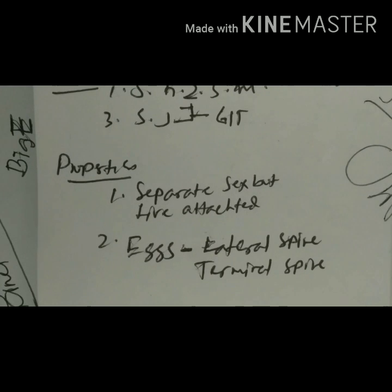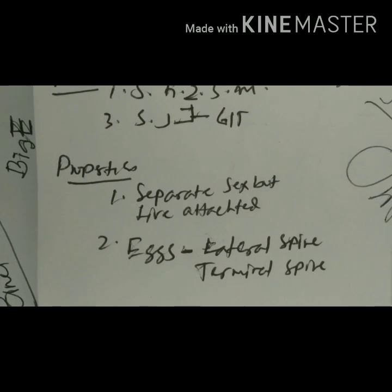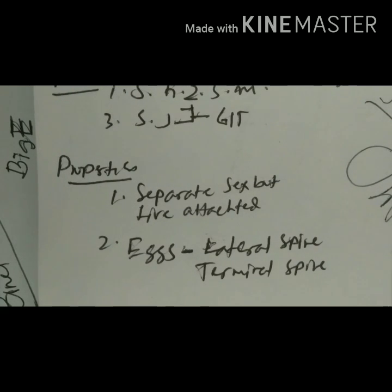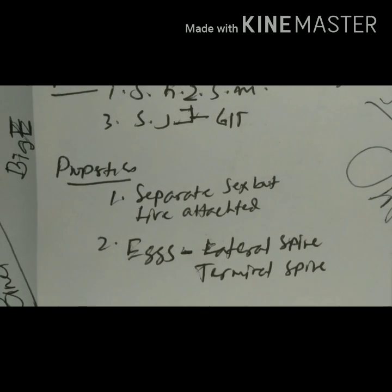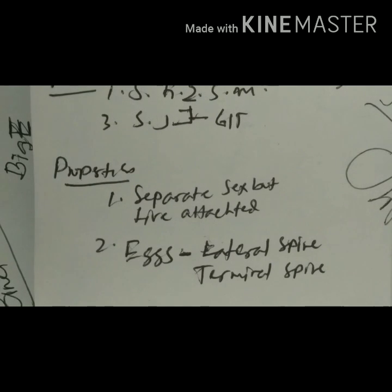There is a distinction between the eggs of Schistosomes and other trematodes. The eggs of Schistosomes are not operculated, whereas the eggs of other trematodes are operculated. The eggs of Schistosoma mansoni and Schistosoma japonicum have a lateral spine, but in the case of Schistosoma haematobium there is a prominent terminal spine. These are important distinguishing features for identifying these eggs in urine or stool and differentiating Schistosoma haematobium from other Schistosomes.